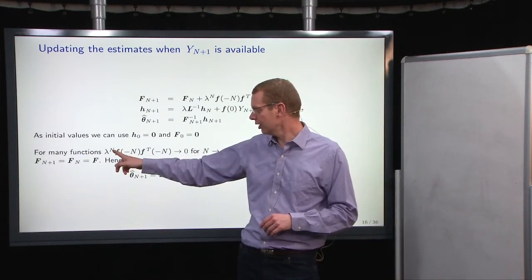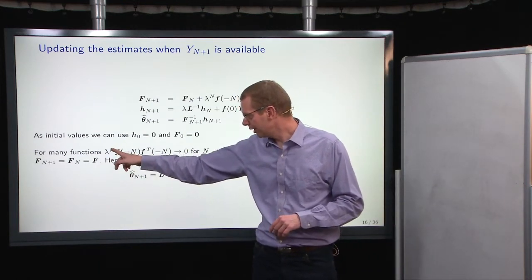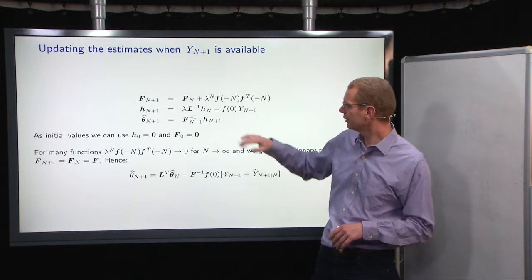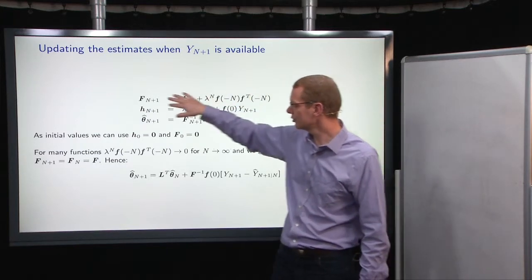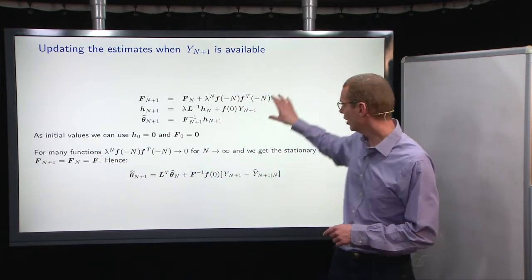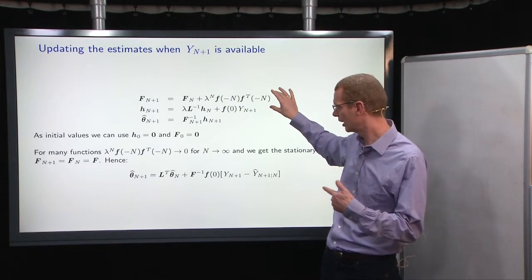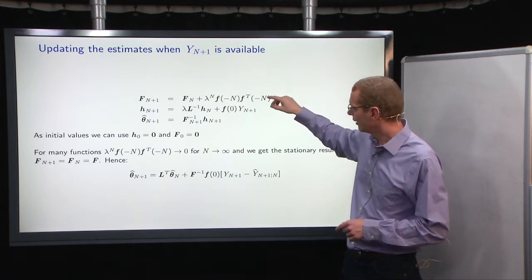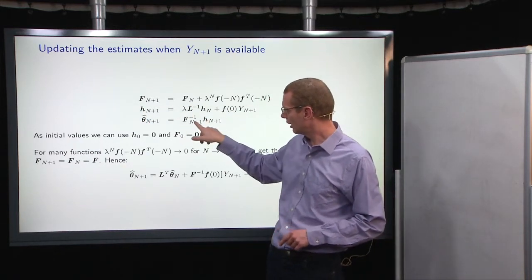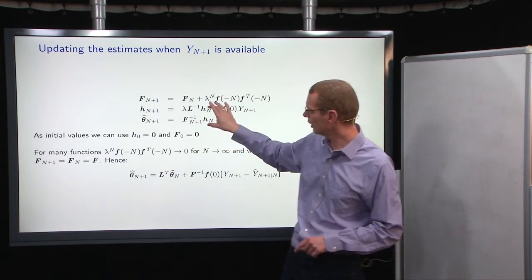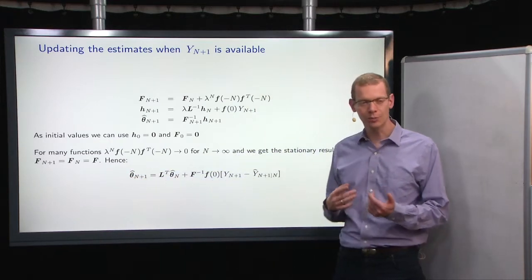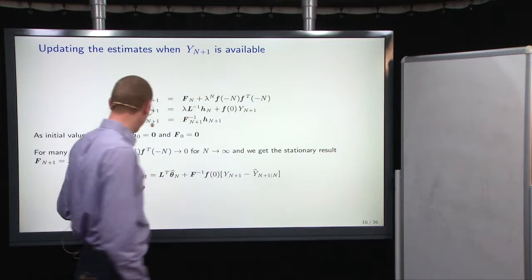Now, again, when n is large, lambda to the n power becomes very small, so it goes to zero when n goes to infinity, and that also means that the first line up here, it converges to a stationary f, because what we add up here is effectively zero every time in relative terms. So with that, we still do the update of h, then we can precalculate this inverse, and then we can reformulate by combining these two equations, we can reformulate it and just write an update of the parameter estimate.